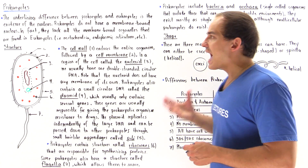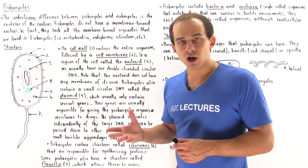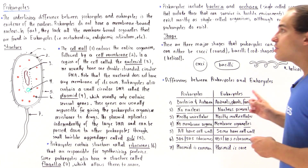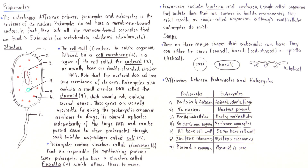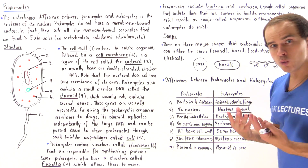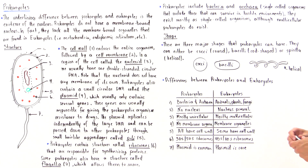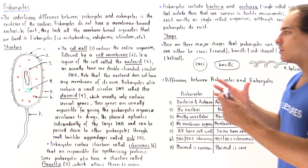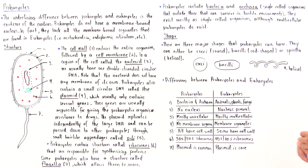All prokaryotes have cell walls, but not all eukaryotes have cell walls. For example, plants do have cell walls, but humans and animals do not have cell walls around their cells.